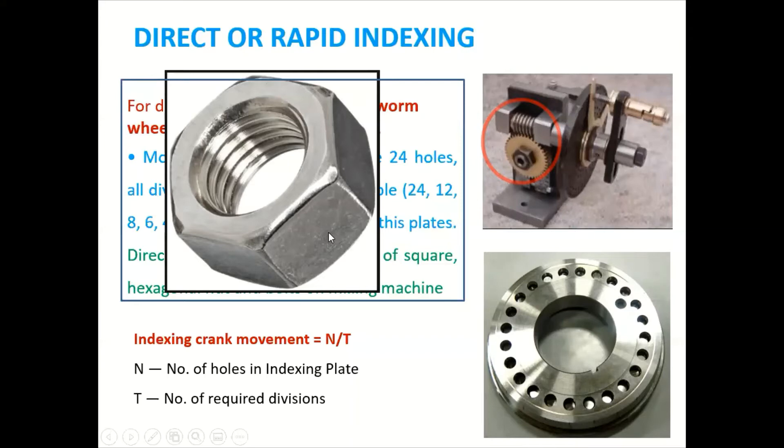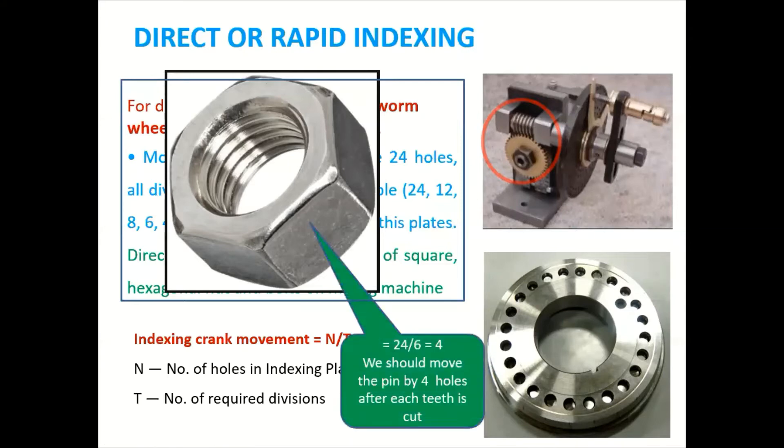So how it is possible there? So as per the formula, there is the number of holes on the index plate divided by number of required division. So in this case we require six divisions. So 24 divided by six will be four. We should move the pin by four holes after each teeth is cut.